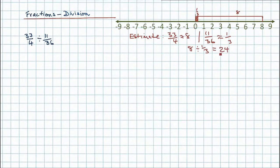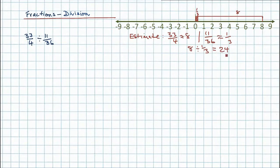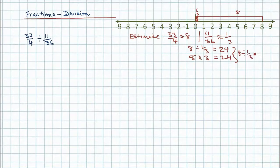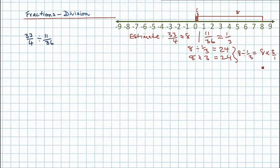8 divided by a third is 24 — 3 in a unit times 8 equals 24. And that's much easier to calculate than 33 fourths divided by 11 36ths. Now I can also rewrite this: 8 times 3 gives me 24. Therefore, 8 divided by a third is equivalent to 8 times 3, or 8 times 3 over 1, because 3 over 1 — 3 divided by 1 — is exactly the same as 3. And I've done this because it gives us a really important idea that we can work with.